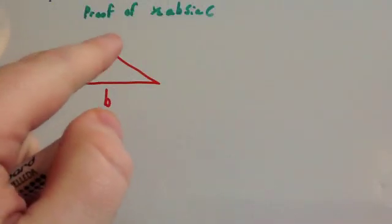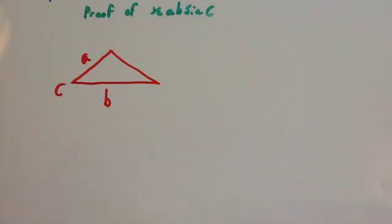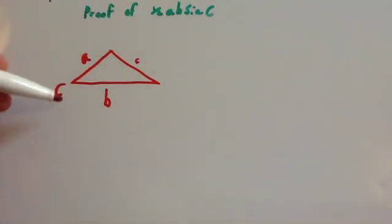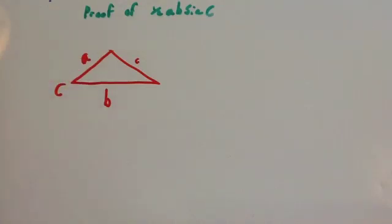In this video we are going to prove that half a b sin C is the area of a triangle. Here I have drawn a triangle and I have called the sides little a, little b, little c, and I have just marked in this angle big C. I could have put in here big B and big A, but we are only going to be using this angle as part of the proof.